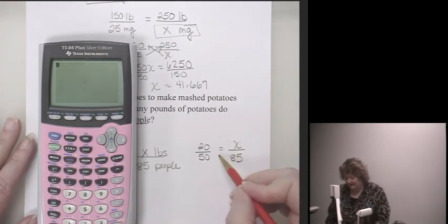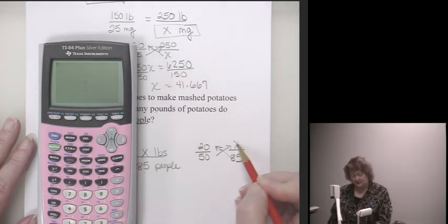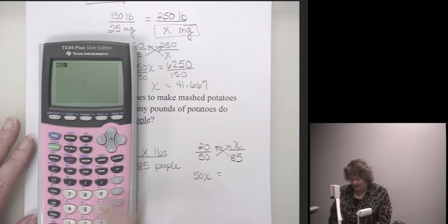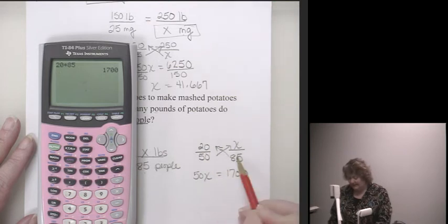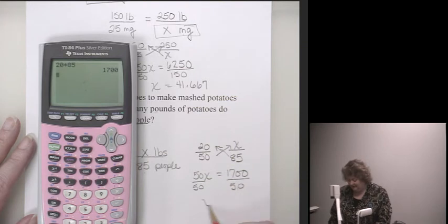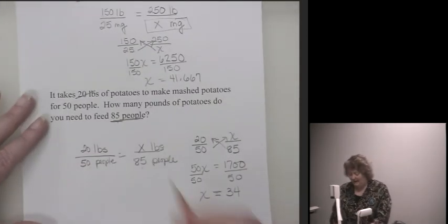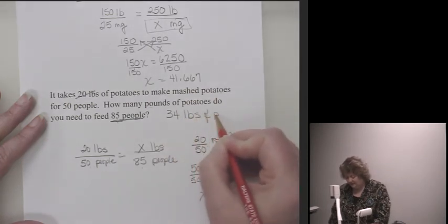That gives me 20 over 50 equals x over 85. I'm going to use again the fact that my cross products must be equal. I find my x first. x times 50 is 50x. Then I multiply my other two numbers. 20 times 85 is 1,700. Divide by 50, and x equals 34. Now x is what? x is pounds. So I know I need 34 pounds of potatoes.